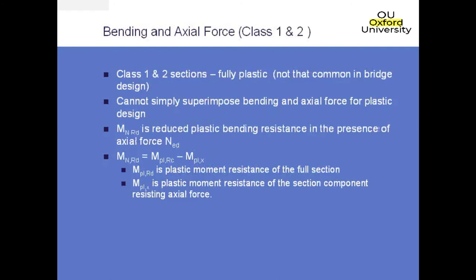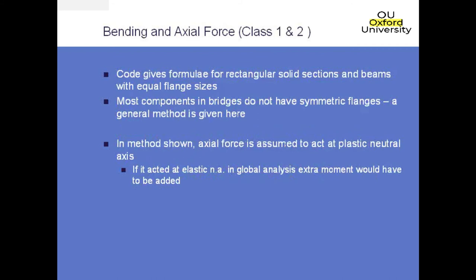For class 1 and 2 sections, they are fully plastic, but generally they won't be very common in bridge design — we generally end up with class 3 and 4 sections. However, class 1 and 2 sections can develop full plasticity throughout the entire depth of the section, and that complicates the check as the stresses from bending and axial force can't simply be superimposed if advantage is to be taken of plasticity. Instead, to calculate the reduced plastic bending resistance where axial load is present, you need to calculate MN,RD. That is just MPL,RD — the plastic moment resistance of the full section — minus MPL,X, which is just the plastic moment resistance of the section component resisting the axial force.